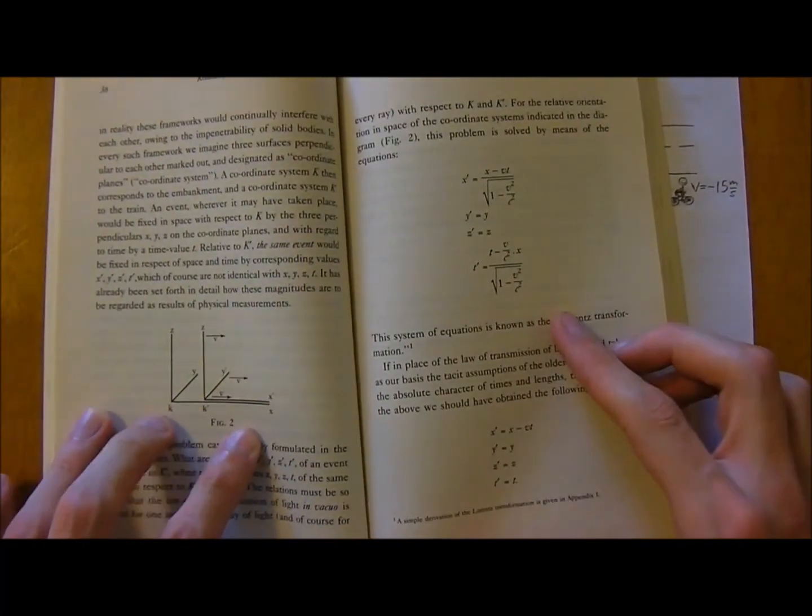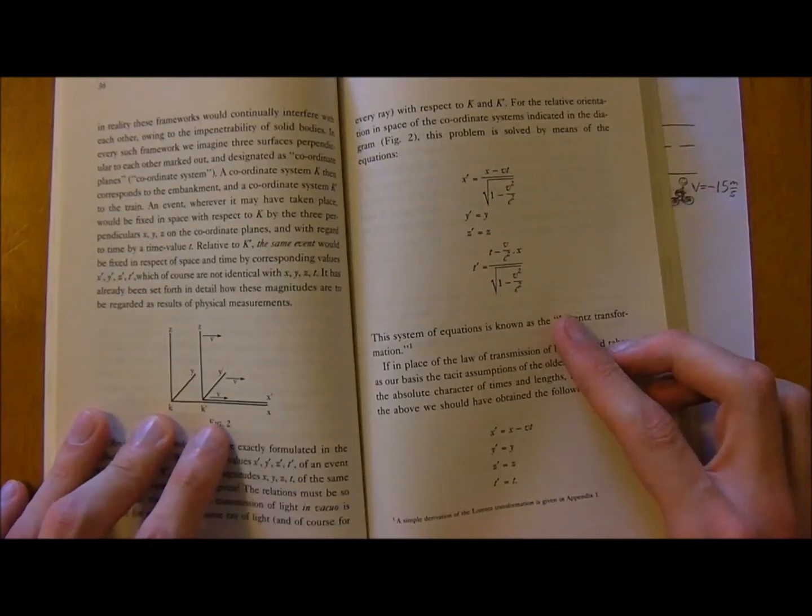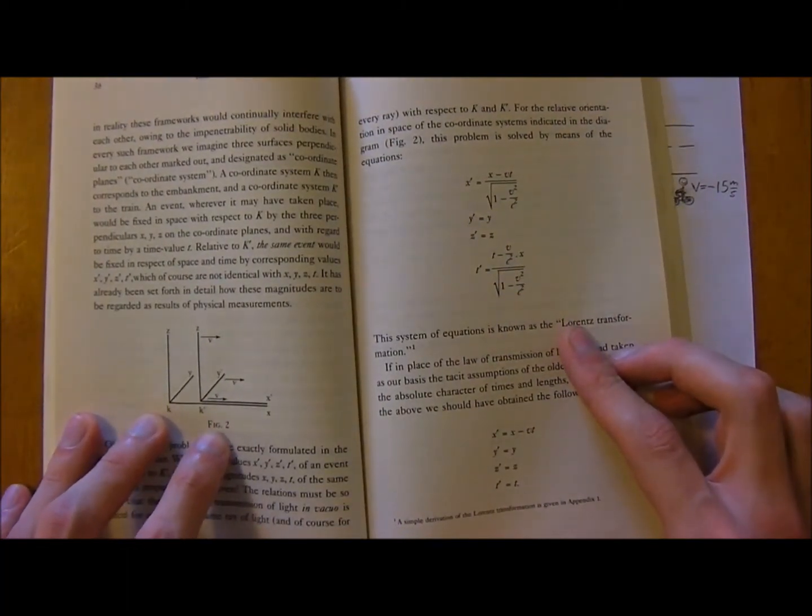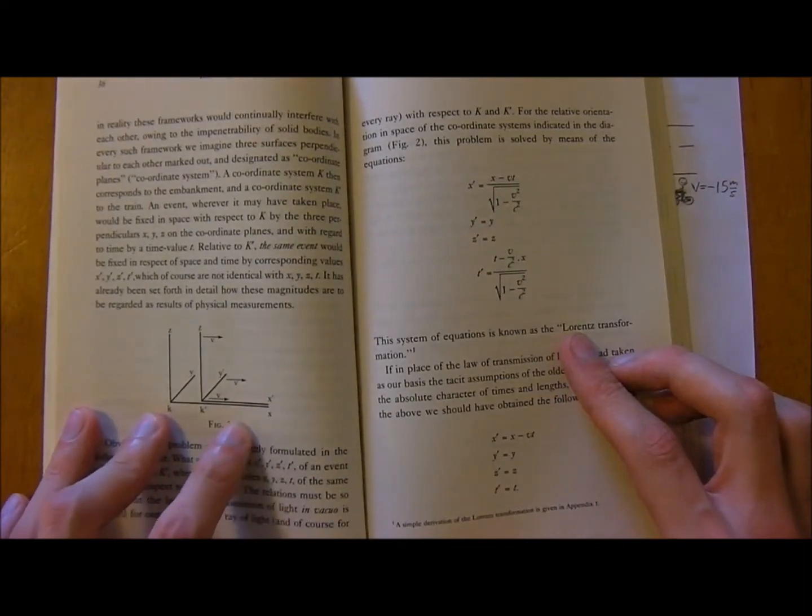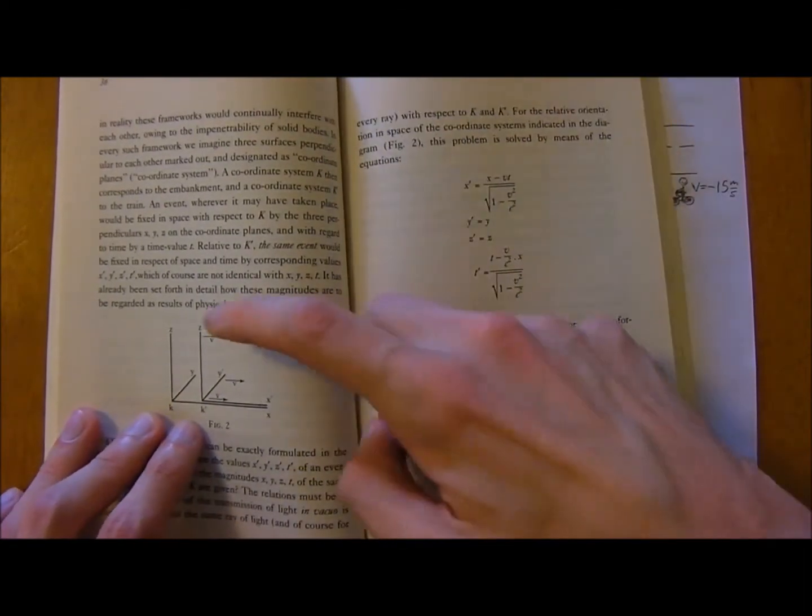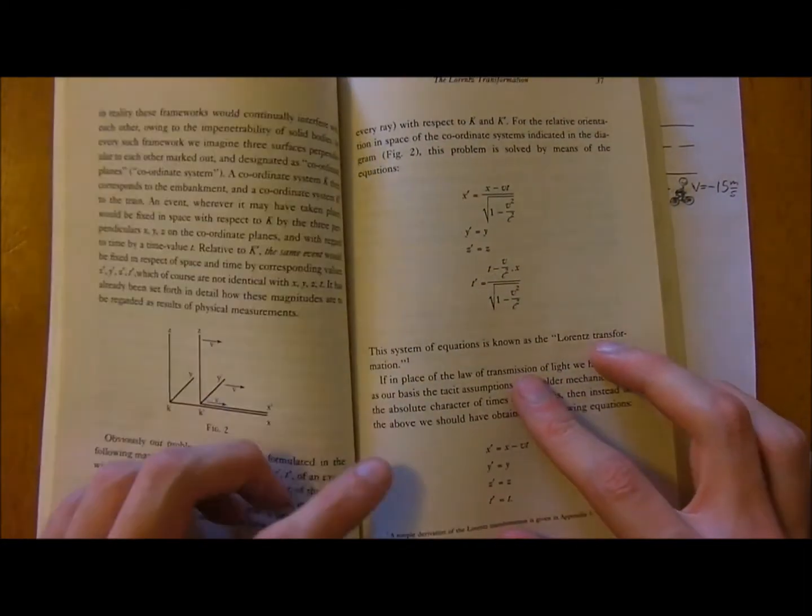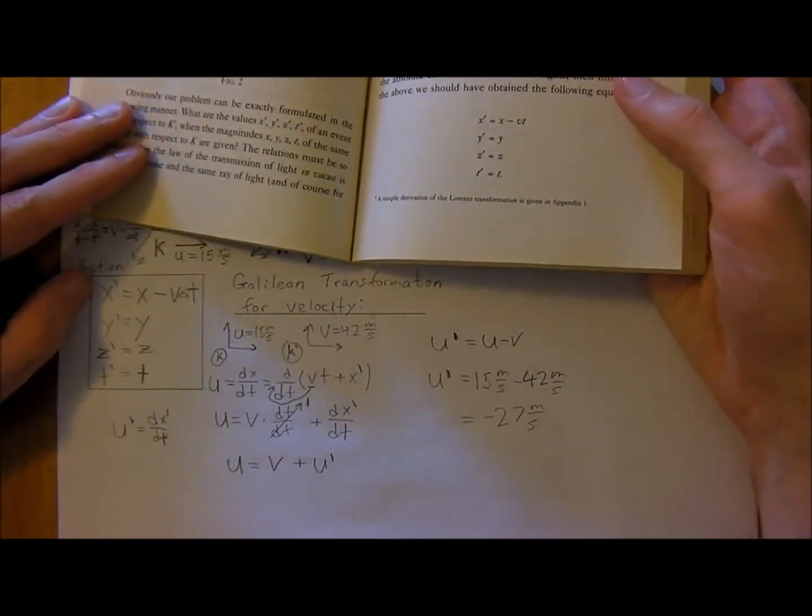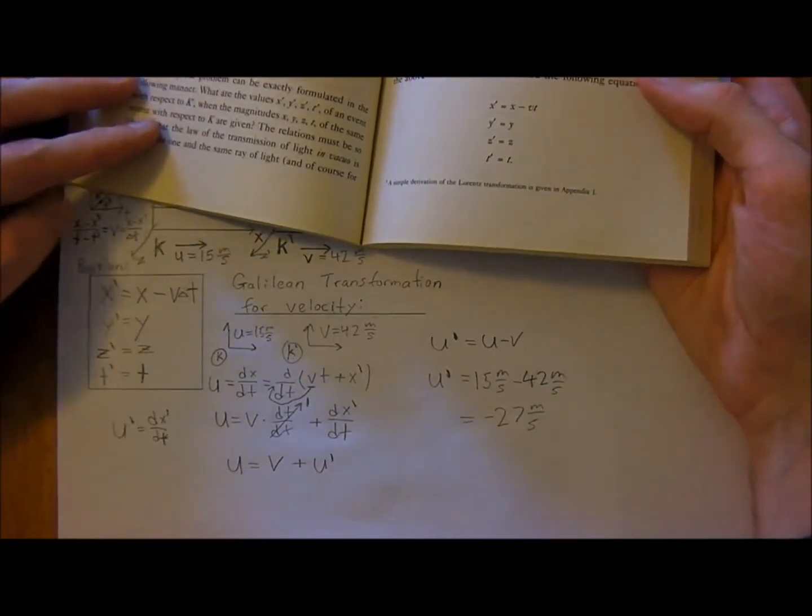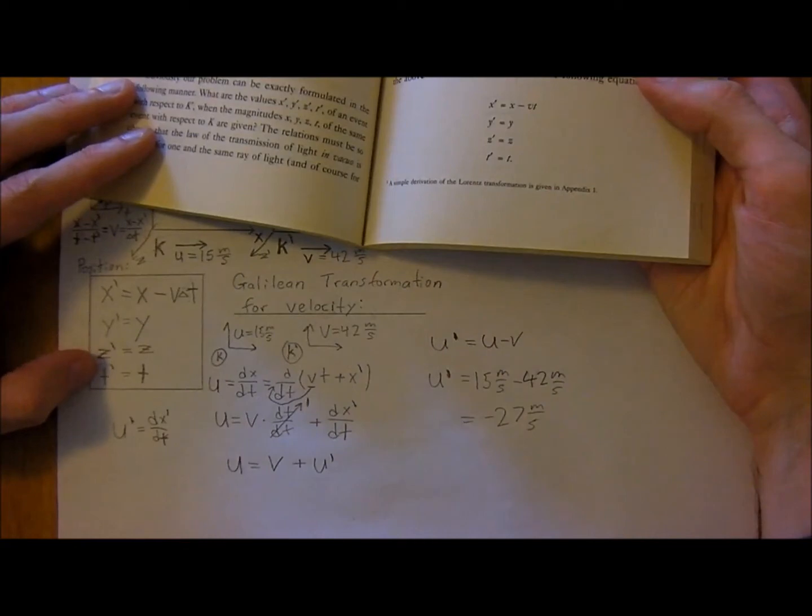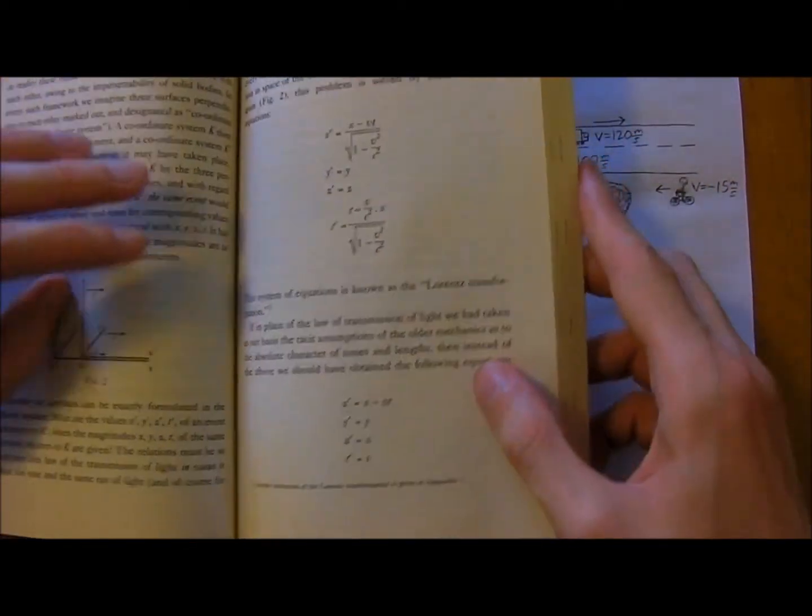And so what Einstein said is, so we have our same axis here, and we've got k and k-naught, and you'll remember this, this is just displayed on the other page, the axis has changed a little bit, but what he said is that actually, it's not, x isn't just equal to the derivation from the slope, and y, z, and t, well, y and z are the same, but actually, t changes as well.